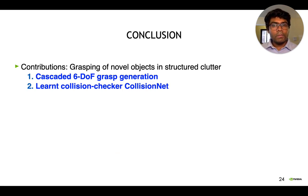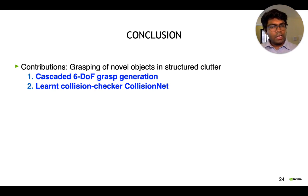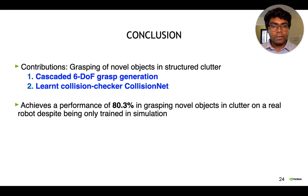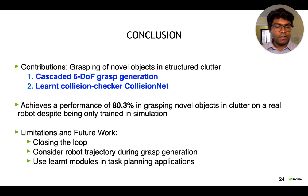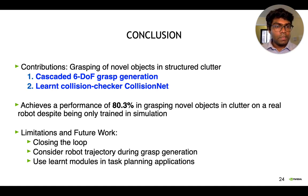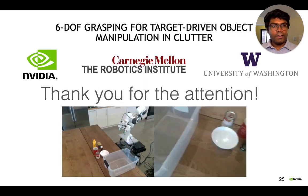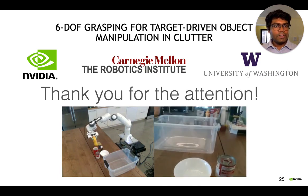In conclusion, we've proposed an approach for grasping unknown objects in clutter. The contributions are a cascaded 6DOF grasp generation method and a learned collision checker, Collision Net. Even though we only trained in simulation, we get competitive performance in grasping novel objects on the real robot. A key limitation is that the approach is currently open-loop, so in future work we can close the loop to remove many failure modes. We can also consider the robot trajectory during grasp generation, and we can use learned modules like Collision Net in task planning applications, which could open up a huge range of possibilities for long-horizon autonomy on real robots. Thank you so much for your attention, and I hope you enjoy ICRA.